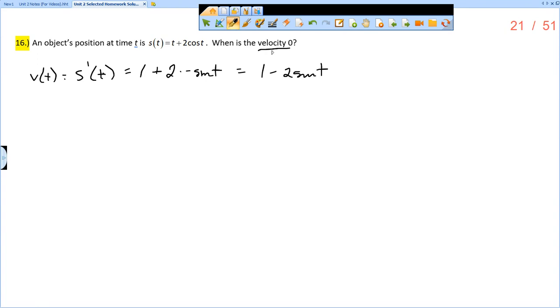So now what do we want to know? We want to solve for t when velocity, so 1 minus 2 sine of t, is equal to zero. This is a relatively easy trig equation to solve.